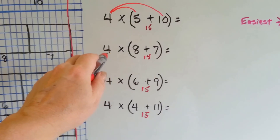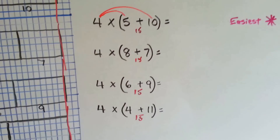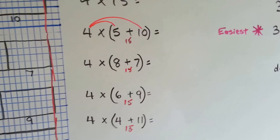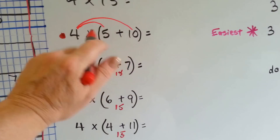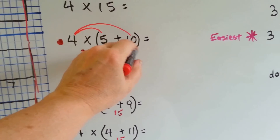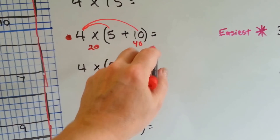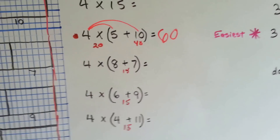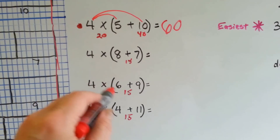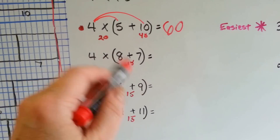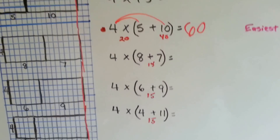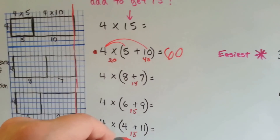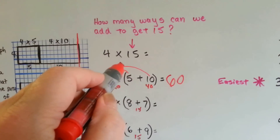In your head, do you know how to do 4 times 8 and 4 times 7 easier? Or is 4 times 5 and 4 times 10 easier? I think this one's easier. 4 times 5 is 20, and 4 times 10 is 40. Then you add 20 plus 40 and you get 60. That, to me, is a lot easier than doing 4 times 6 plus 4 times 9, or 4 times 8 plus 4 times 7, because those are a little harder to remember. But the 5s and the 10s are easy to remember. So you could choose the ones that are the easiest.